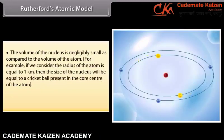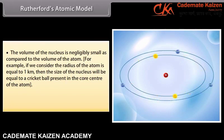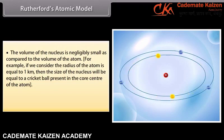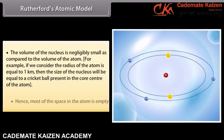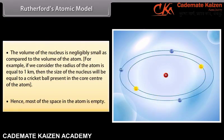The volume of the nucleus is negligibly small as compared to the volume of the atom. For example, if we consider the radius of the atom to be equal to 1 km, then the size of the nucleus will be equal to a cricket ball present at the core center of the atom. Hence, most of the space in the atom is empty.